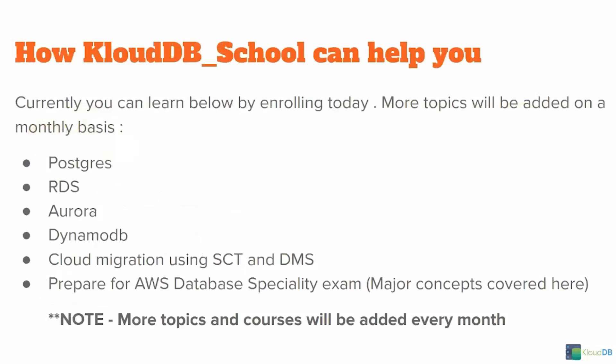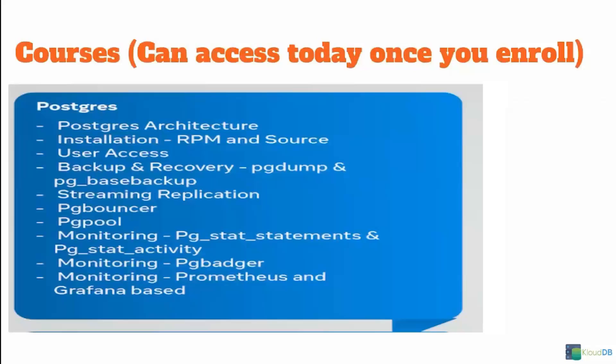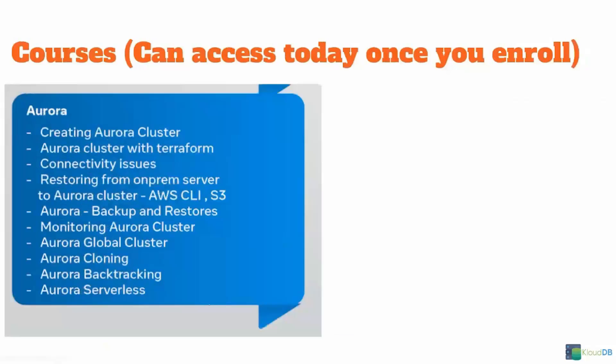How CloudDB School can help you: currently you can learn the following by enrolling today — more topics will be added monthly. Courses include Postgres, RDS, Aurora, DynamoDB, cloud migration using SCT and DMS, and AWS Database Specialty exam prep. For Postgres: architecture, installation (RPM and source), user access, backup and recovery, streaming replication, PgBouncer, PgPool, monitoring with pg_stat_statements, pg_stat_activity, PgBadger, and Prometheus/Grafana. For Aurora: creating Aurora clusters, Aurora with Terraform, connectivity issues, restoring from on-prem to Aurora, backups and restores, monitoring, global cluster, cloning, backtracking, and Aurora Serverless.